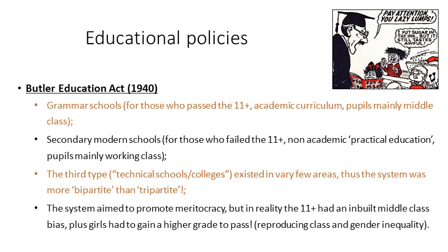Secondly, there were secondary modern schools, for the vast majority of students who failed the eleven-plus. They were considered to be non-academic and received, for the most part, a practical education, although there would be some basic tuition in English language and literature, maths and science. These students tended to be working class, and they made up the vast majority of students and schools.